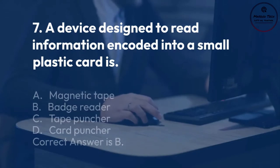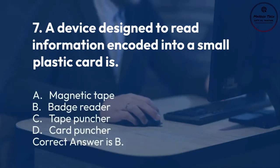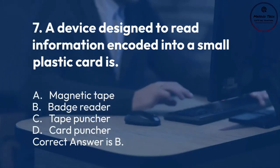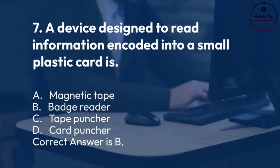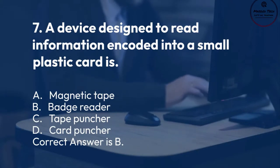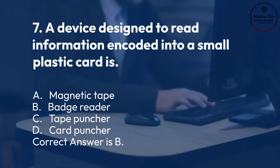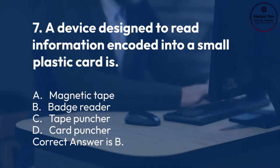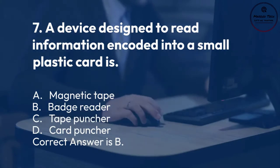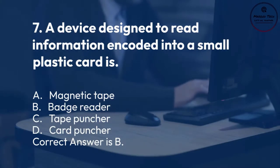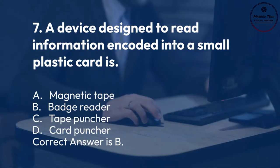Number 7. A device designed to read information encoded into a small plastic card is: A. Magnetic tape. B. Badge reader. C. Tape puncher. D. Card puncher. Correct answer is B.